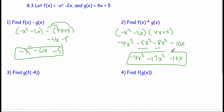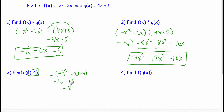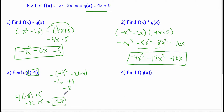Finding g of f of negative 4: plug negative 4 into f first. That's negative of negative 4 squared minus 2 times negative 4. Negative 4 squared is 16, so negative 16 plus 8 is negative 8. Now plug negative 8 into g: 4 times negative 8 plus 5 is negative 32 plus 5, which is negative 27.